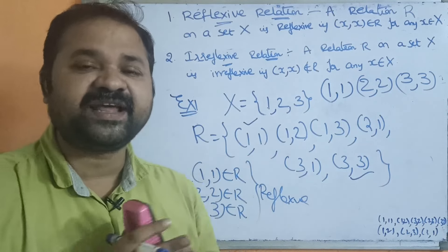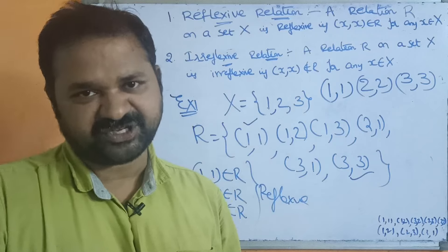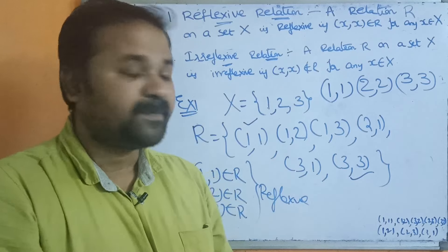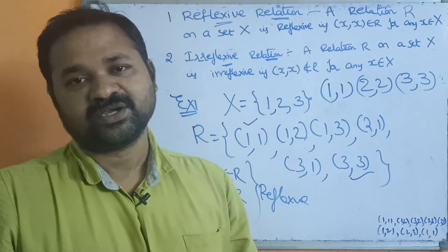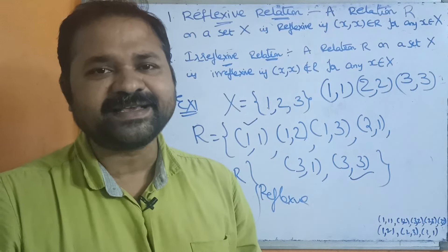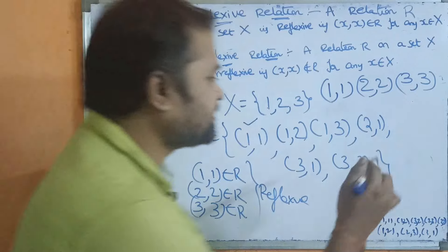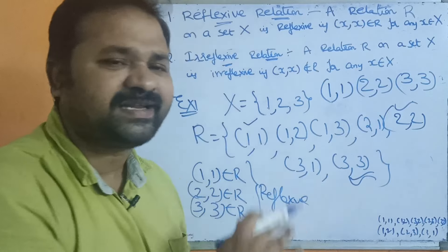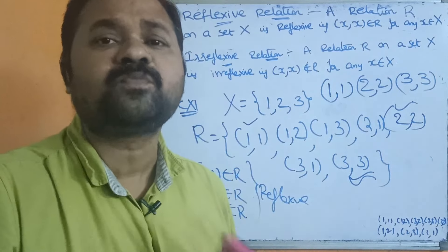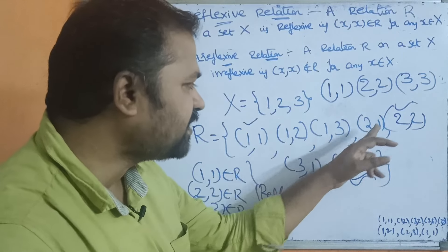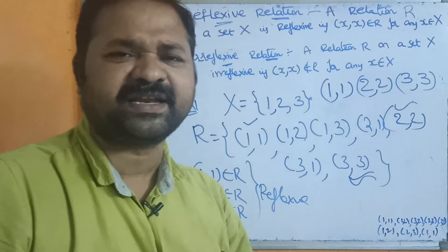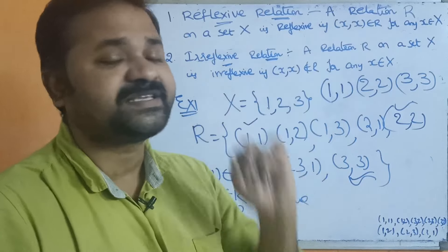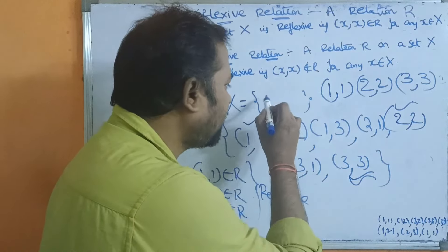Now let us eliminate one pair — let us remove (2,2) and check whether it is still reflexive. It is not reflexive, because the elements of the set are 1, 2, 3, but (2,2) is not present in the relation. If (2,2) is missing, we cannot call it a reflexive relation. Note that other ordered pairs like (1,2), (1,3), (2,1), (3,1) do not matter — we only focus on whether (x, x) is present.